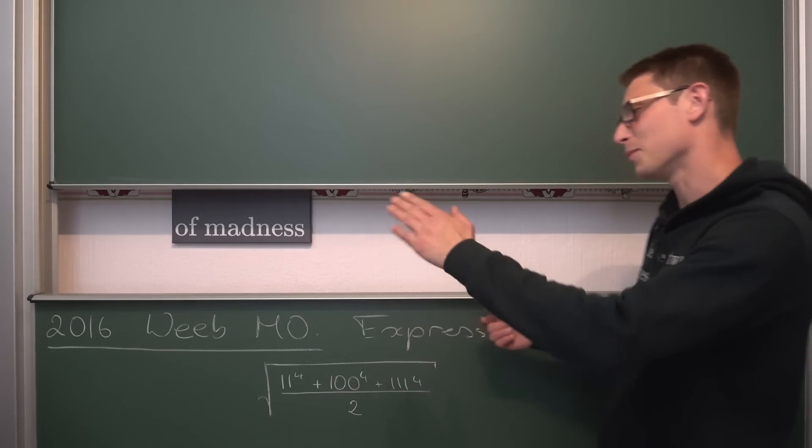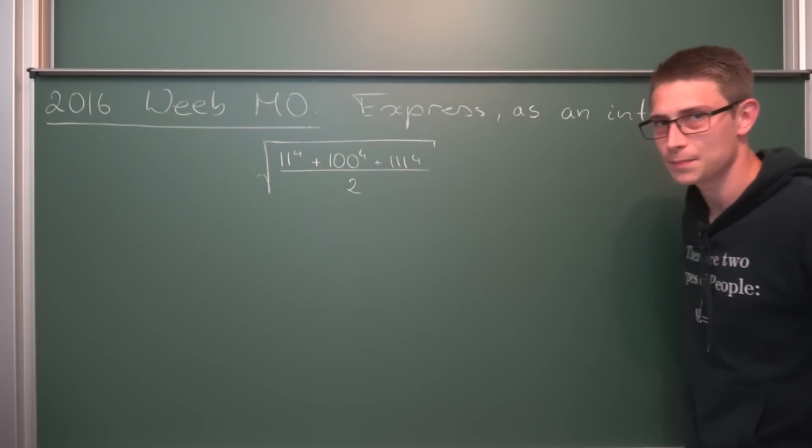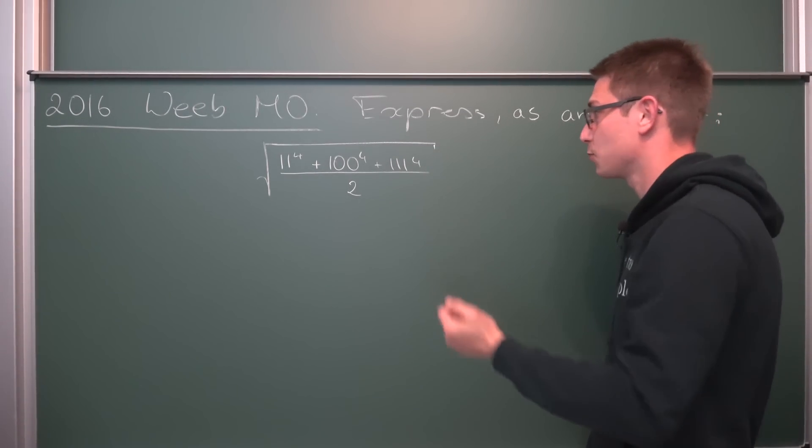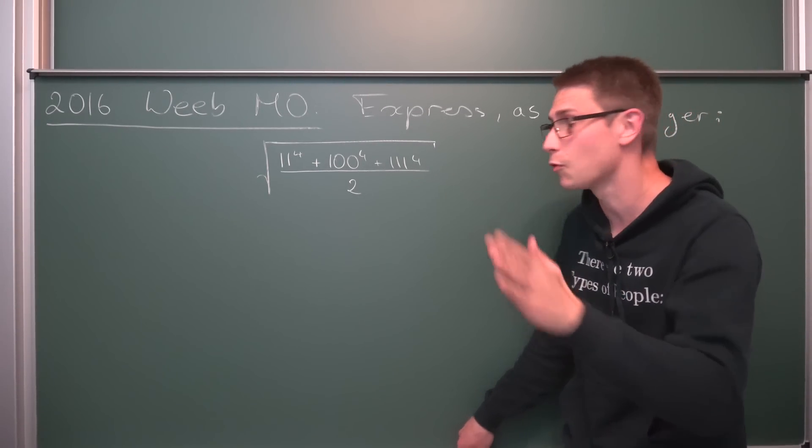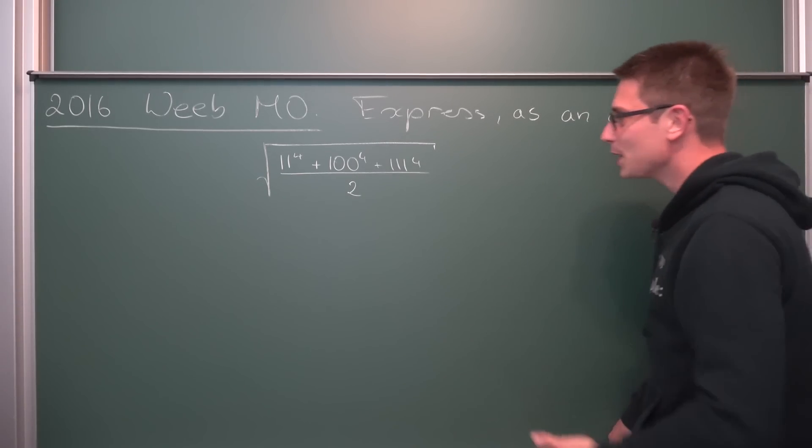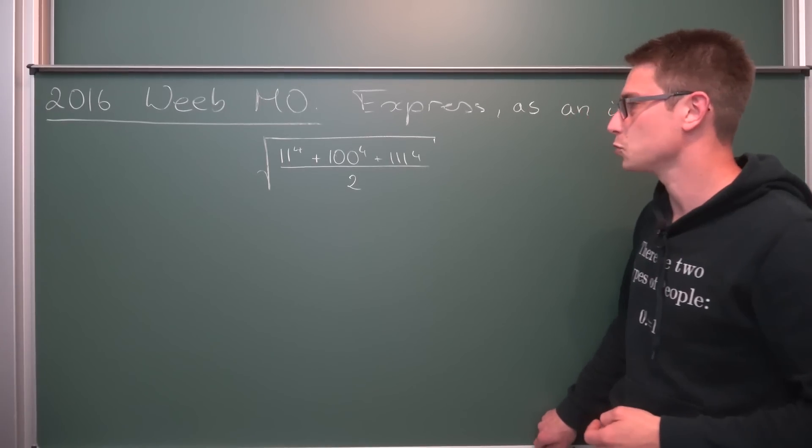Today, one from the 2016 Japanese Mathematics Olympiad. We need to express the square root of 11 to the 4th power plus 100 to the 4th power plus 111 to the 4th power divided by 2 as an integer. And I really enjoyed this question and I think you are going to do so too.